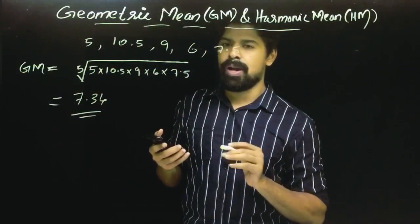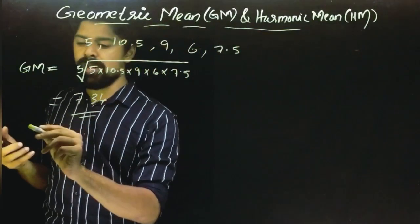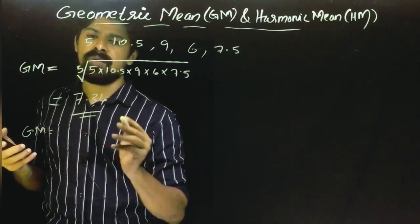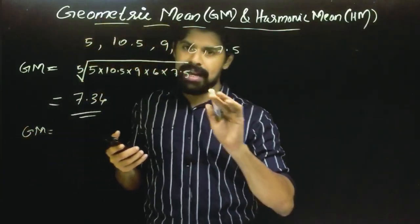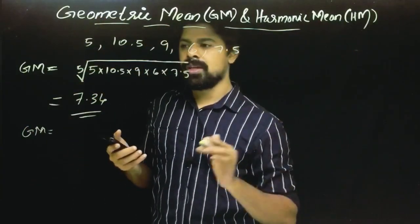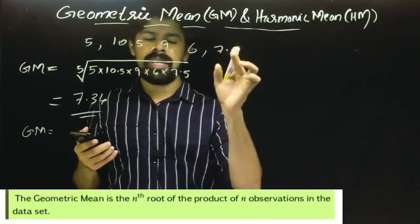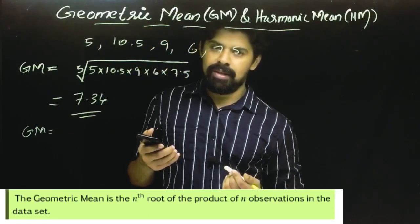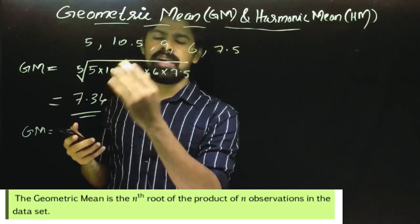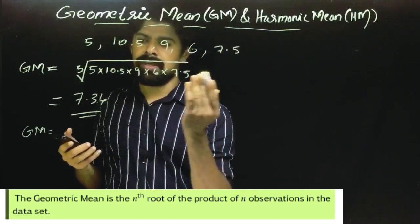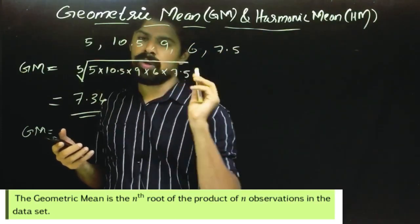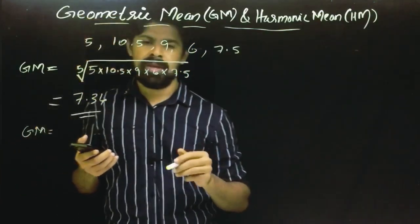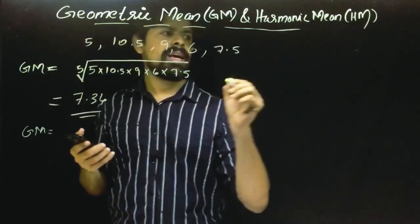Let's look at GM's general formula. The geometric mean is the nth root of the product of n numbers. So if we have n numbers, we multiply all of them together and take the nth root of their product.